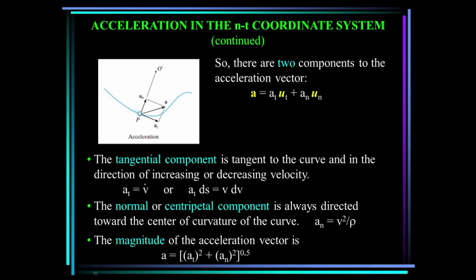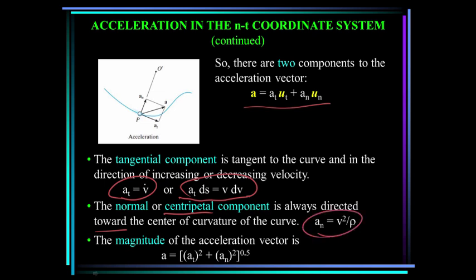There are two components to the acceleration vector in this coordinate system. The tangential component is tangent to the curve and in the direction of increasing or decreasing velocity, so a-sub-t equals v-dot. We can also use the equation a-sub-t ds equals v dv. The normal or centripetal component is always directed towards the center of curvature and is defined by v-squared over rho. The magnitude of the acceleration vector is just the square root of the sum of the squares.